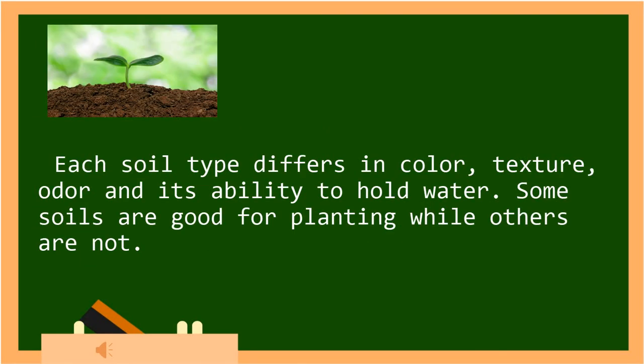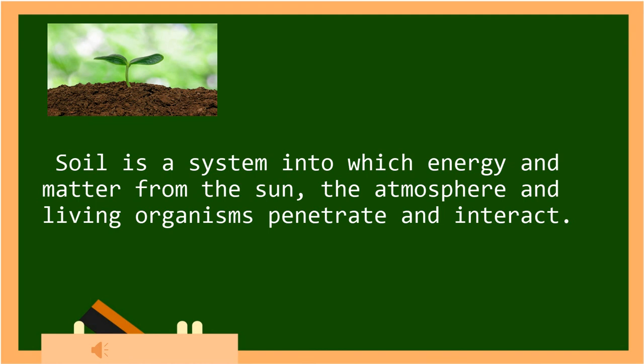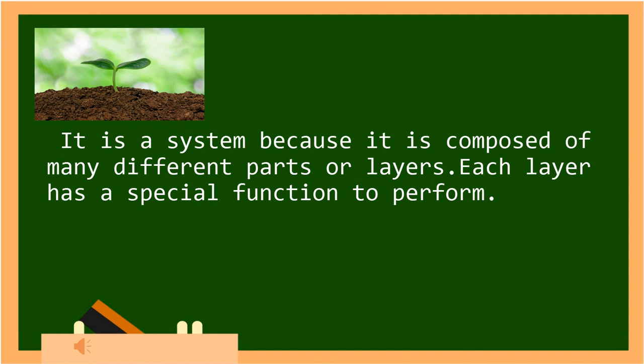Each soil type differs in color, texture, odor, and its ability to hold water. Some soils are good for planting while others are not. Soil is a system into which energy and matter from the sun, the atmosphere, and living organisms penetrate and interact. It is also considered a system because it is composed of many different parts or layers, and each layer has a special function to perform.